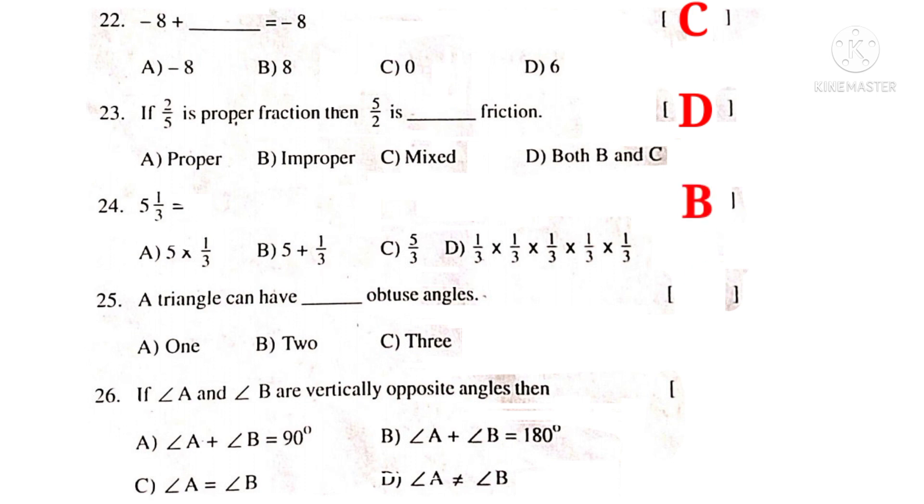A triangle can have dash obtuse angles. Since the sum of the angles is 180 degrees, it has only 1. So, the correct choice is A.